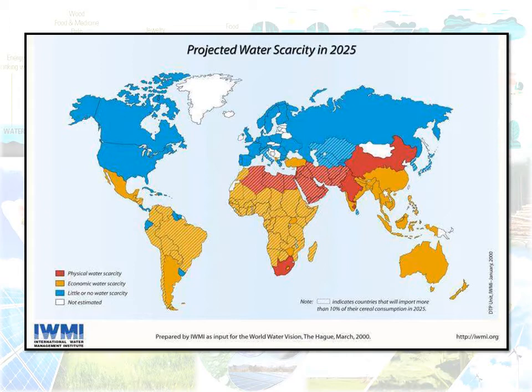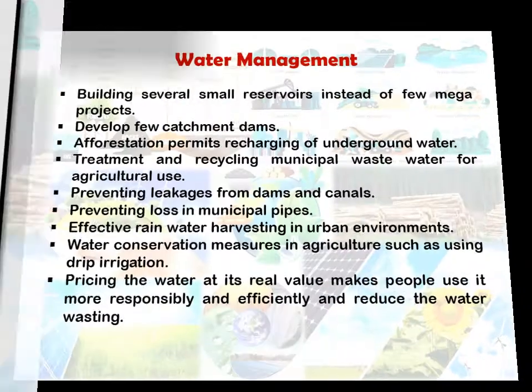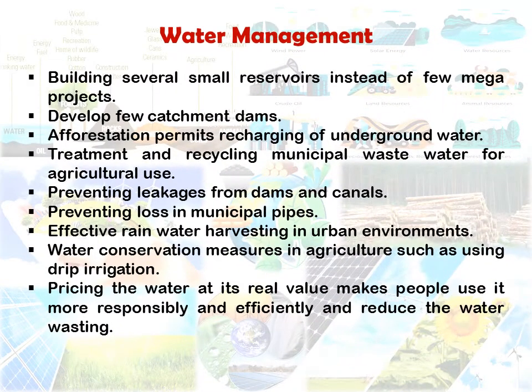By 2025, these are the projected water scarcity areas across the whole world. Water management involves several key steps: development of catchment areas, treatment and recycling of municipal waste, preventing leakage and loss in municipal pipes, and effective rainwater harvesting.